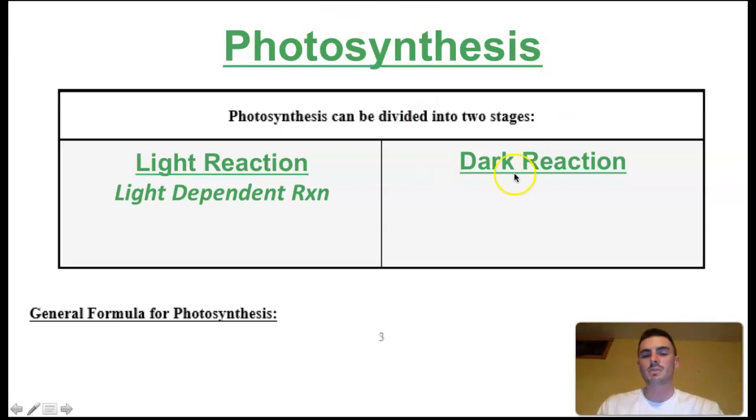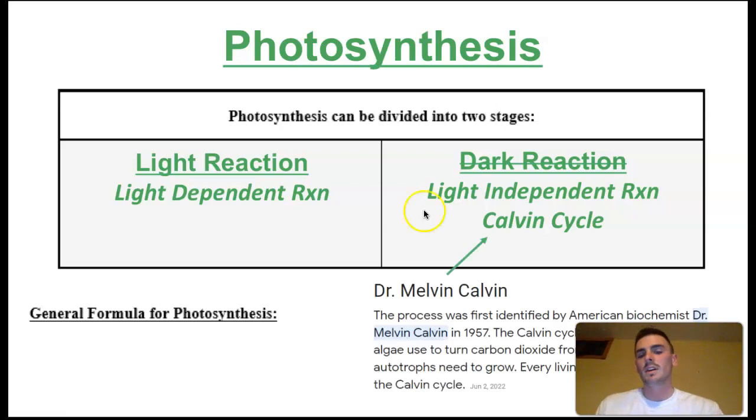The second stage was originally called the dark reaction. We have the light reaction, we have the dark reaction. But the dark reaction really is a pretty sucky name because what it insinuates is that this second part of photosynthesis has to happen in the dark, and really that's not true. It can happen in the light, it can happen in the dark. It doesn't need it to be dark though. So we kind of started calling it the light independent reaction. If you're independent of your parents, that means you don't need them for finances. This reaction is independent of light because it doesn't need it.